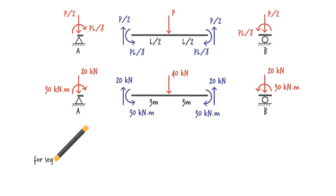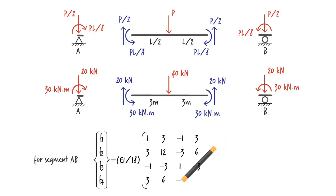Let's now rewrite the member equations using these values. We are going to follow the same procedure for finding the equivalent joint loads for the distributed load in segment BC.